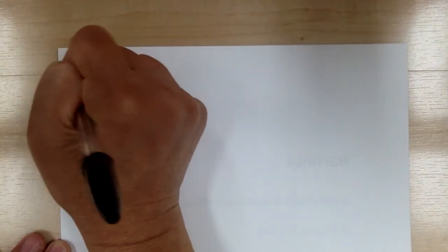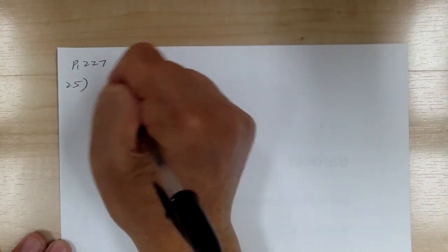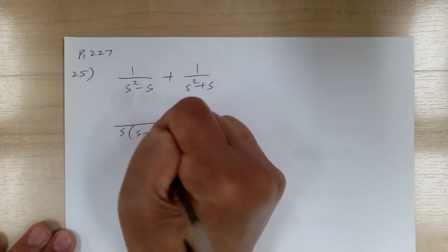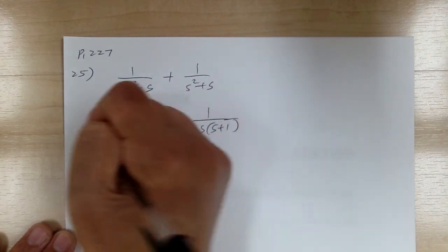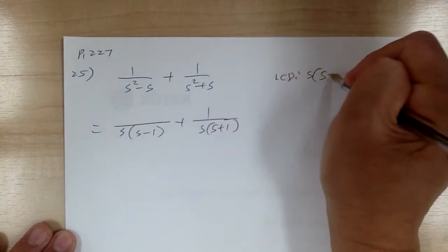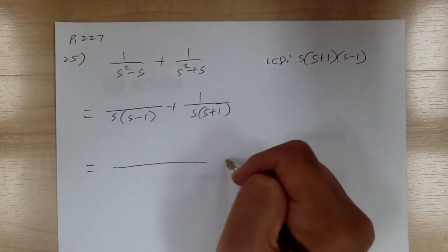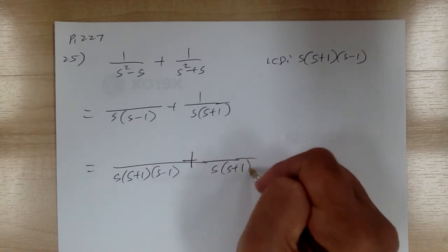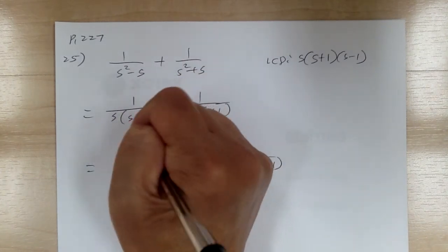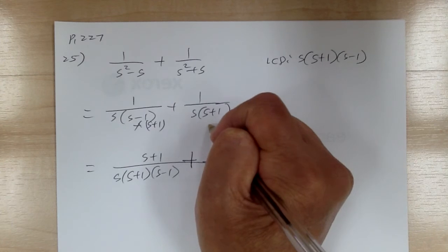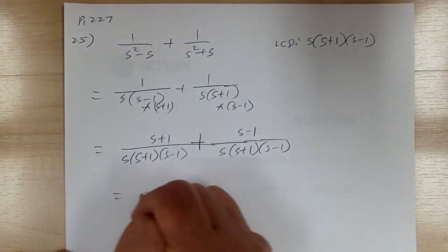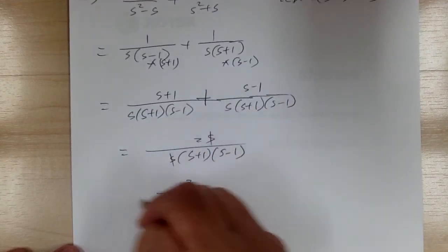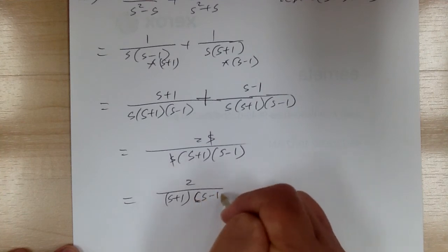Let's go to number twenty-five. You have one over x squared minus s, plus one over x squared plus s. Before you get your LCD, factor first. You get s times s minus one, and s times s plus one. So your LCD is s times s plus one times s minus one. Get your template ready. From the first fraction, you need to multiply by s plus one — giving s plus one. From the second, multiply by s minus one — giving s minus one. Add them together: you get 2s over s times s plus one times s minus one. The s cancels out, giving two over s plus one times s minus one.